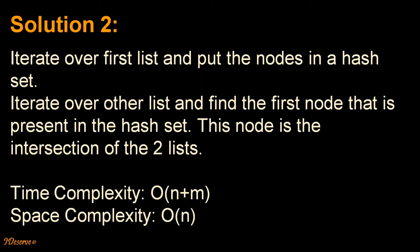We will go to solution 2. Solution 2 is iterate over first list and put the nodes in a hash set. Then iterate over second list and find the first node that is present in the hash set. This node is the intersection of the two lists.